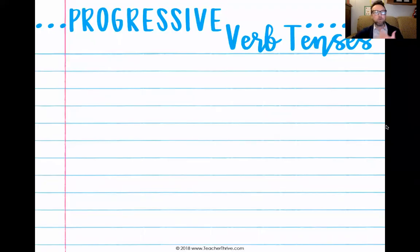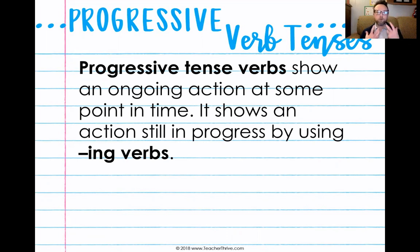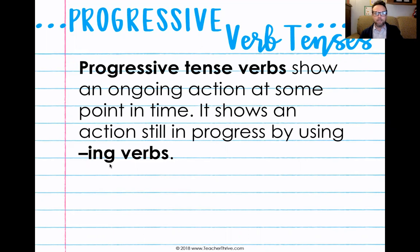For the progressive verb tenses, those show an ongoing action. Whereas 'Ty visited Kay' happened and then it was over, progressive tense means something that is happening over a period of time — it's ongoing. It's something that started, but kept on going. It shows an action still in progress, and the verbs will show the ending in -ing.